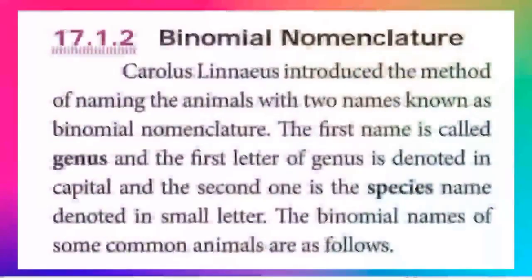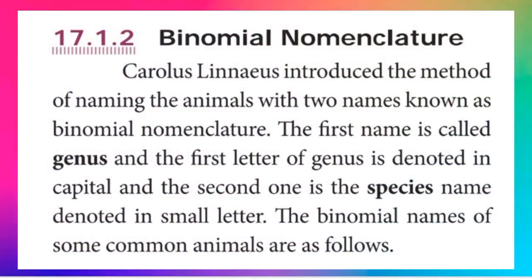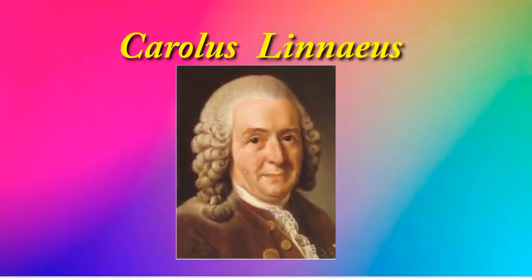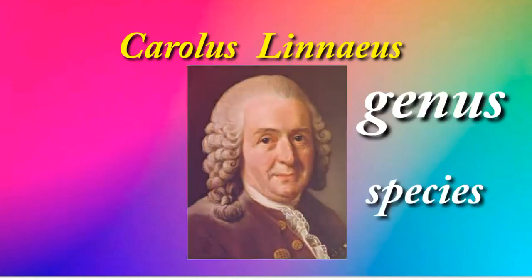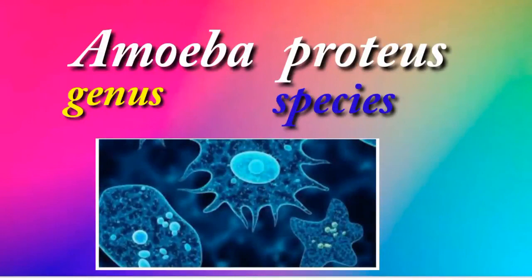Binomial nomenclature: Carolus Linnaeus introduced the method of naming animals with two names, known as binomial nomenclature. The first name is called the genus name, with the first letter in capital; the second is the species name, written in small letters. For example, Amoeba proteus — Amoeba is the genus name and proteus is the species name.